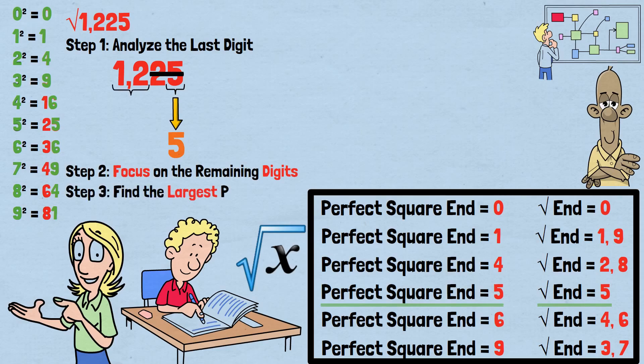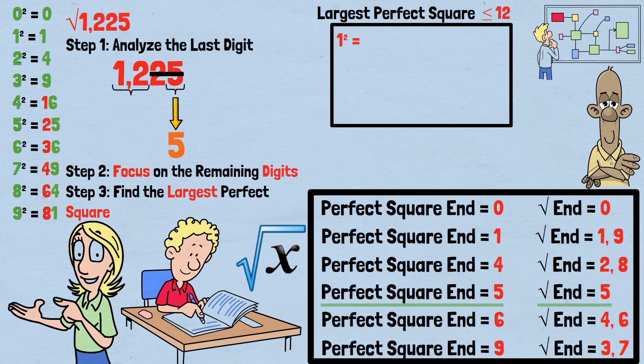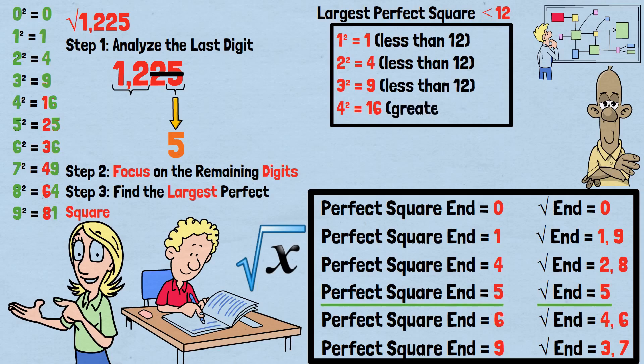Step 3: Find the largest perfect square. We need to find the largest perfect square that is less than or equal to 12. Let's consider the possibilities: 1 squared equals 1, less than 12. 2 squared equals 4, less than 12. 3 squared equals 9, less than 12. 4 squared equals 16, greater than 12. So 3 squared equals 9 is the largest perfect square that doesn't exceed 12. This tells us that the first digit of our square root is 3.